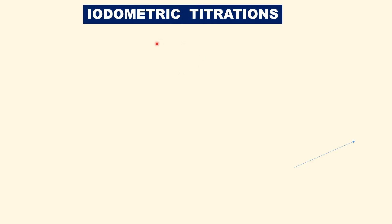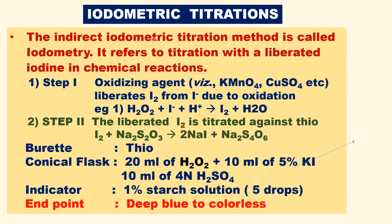Now let us see what iodometric titration is. It is an indirect titration method. Iodimetric titration is the direct method; iodometric is the indirect method. In iodometric titration, the liberated iodine is titrated against thiosode. In the previous case (iodimetric), the standard iodine is titrated against thiosode. In this case, the liberated iodine is titrated against thiosode — this is the only difference.